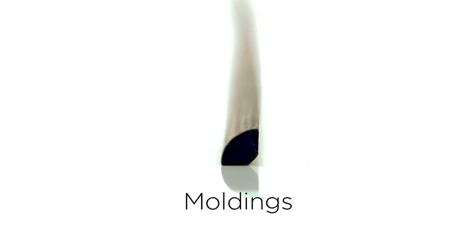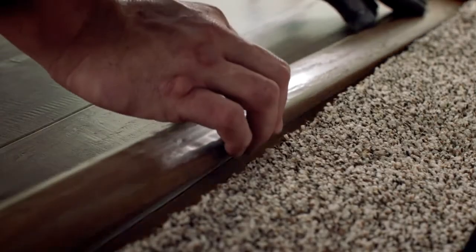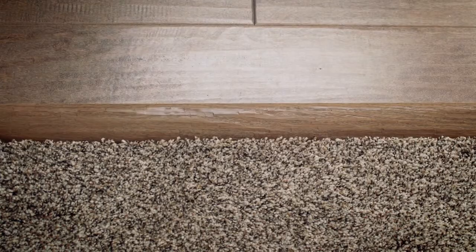Quarter round covers the expansion gap around the perimeter of the room and gives the room a polished look. In doorways less than 6 feet wide, you'll need a transition piece. Use a T-molding if connecting to a floor of the same height, or a reducer if connecting to a floor of a different height. These pieces create a safe and attractive transition.